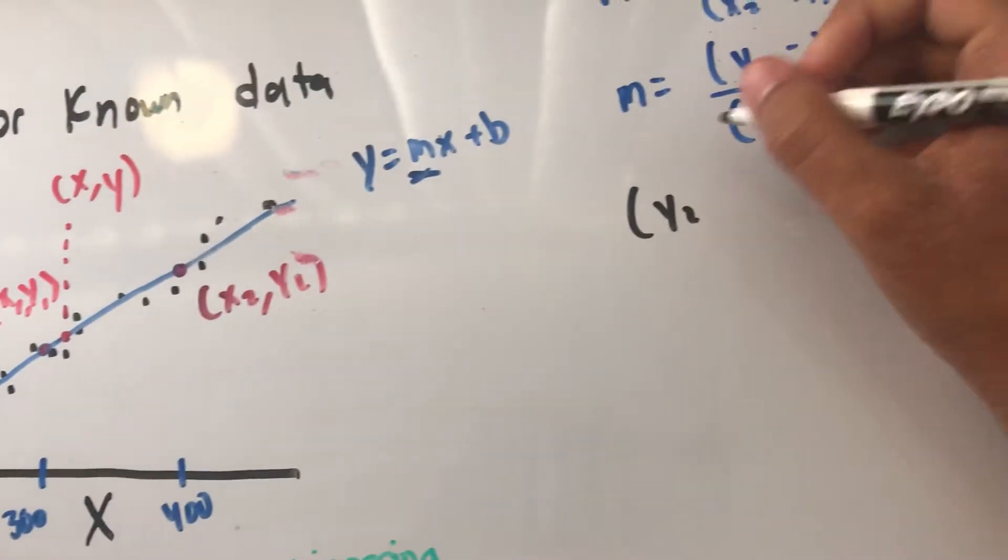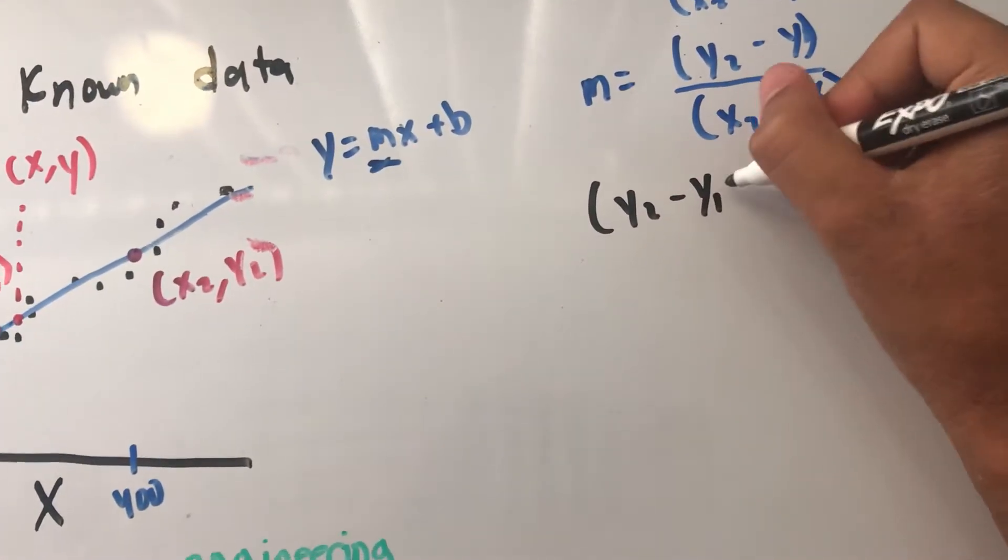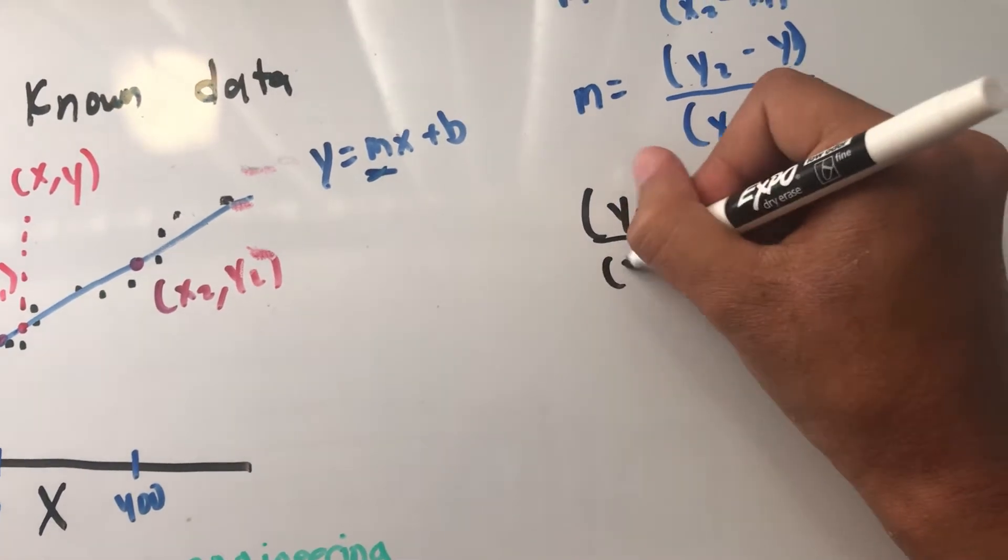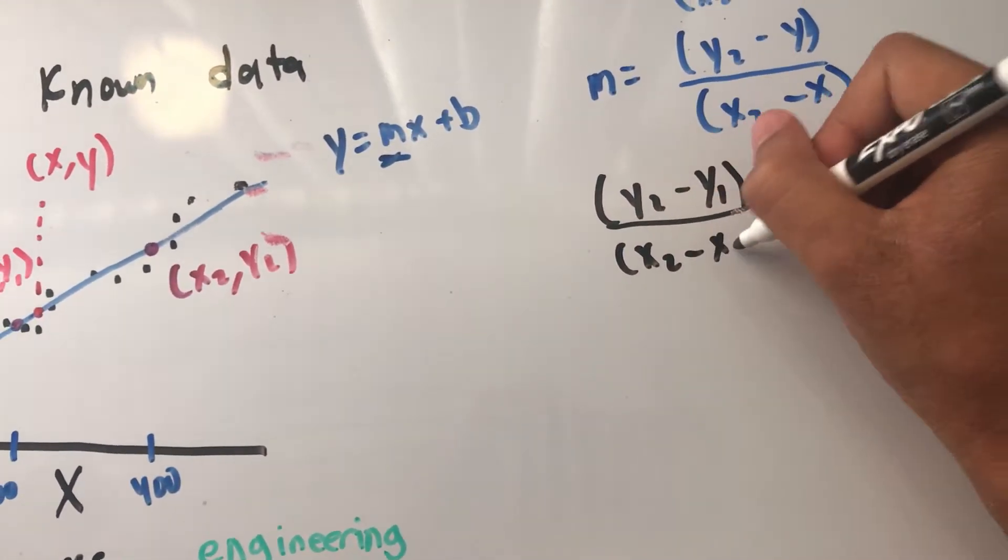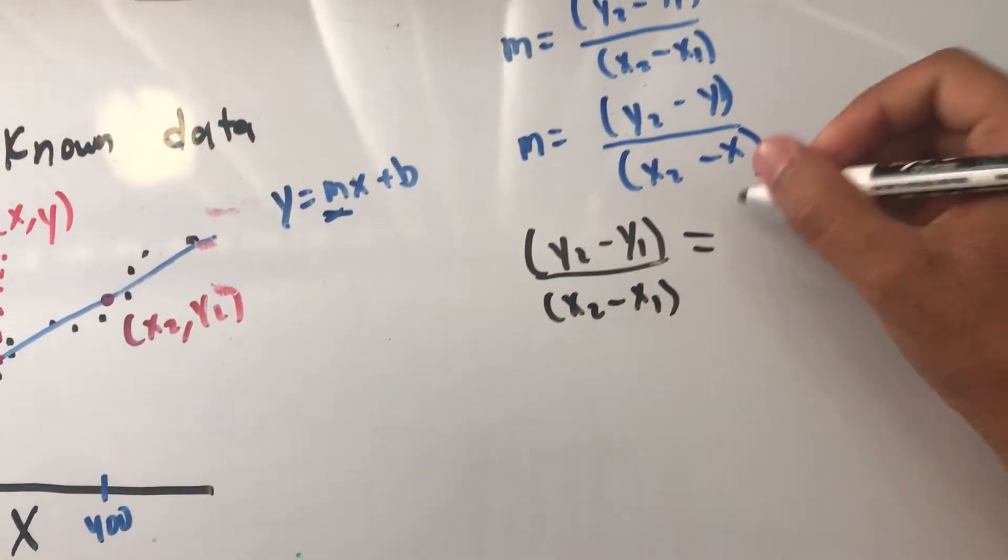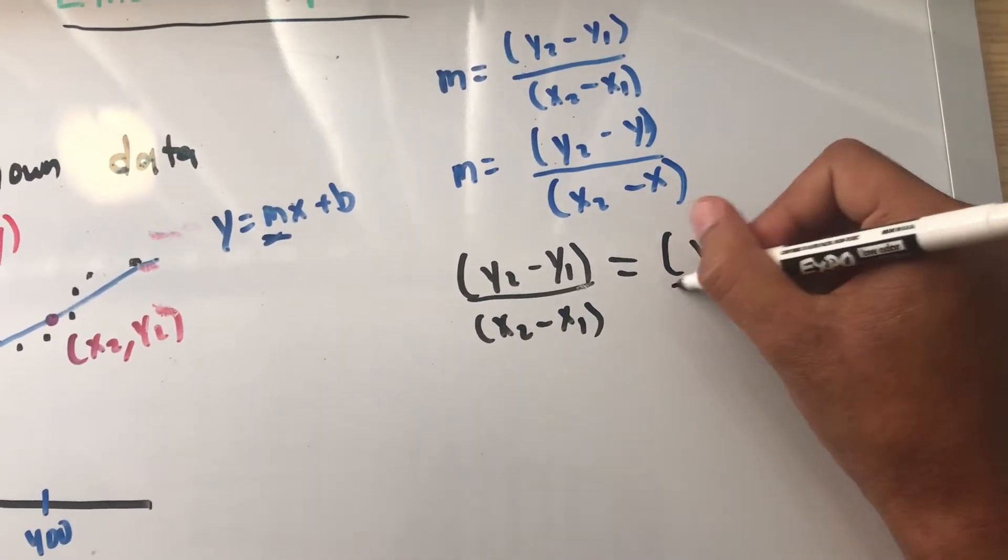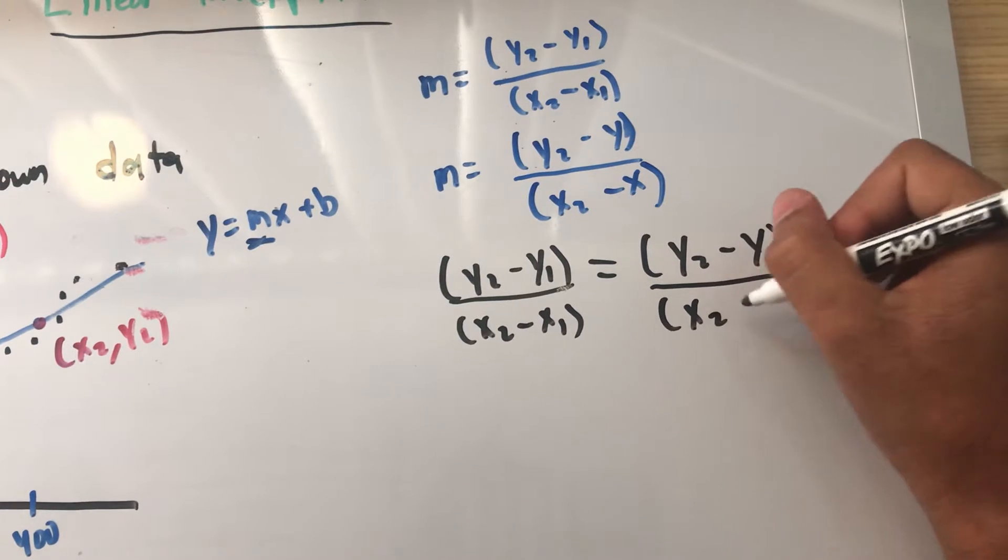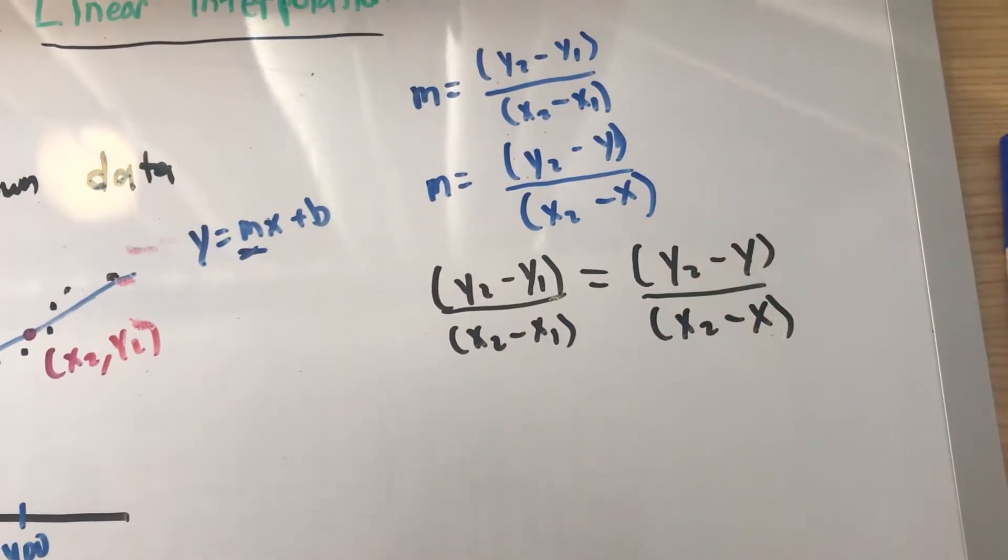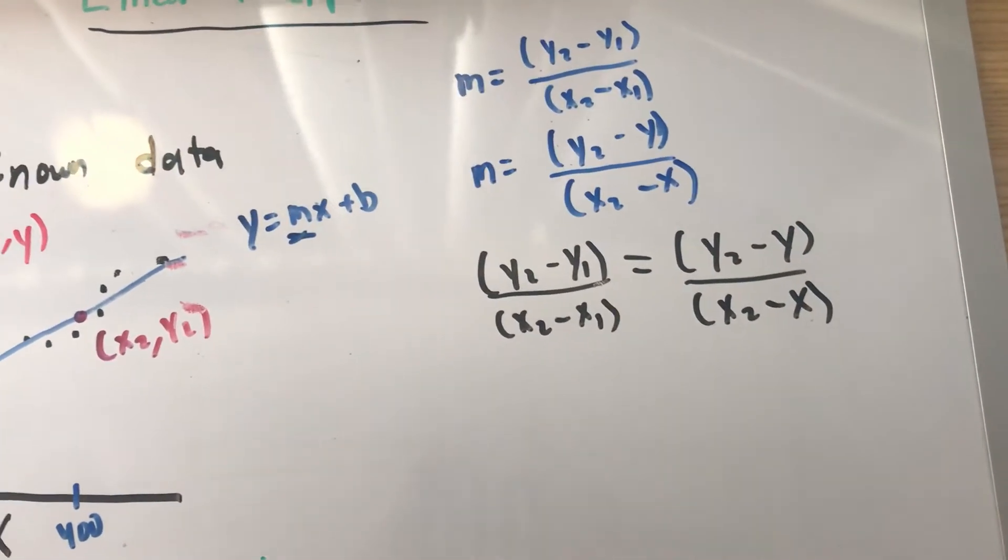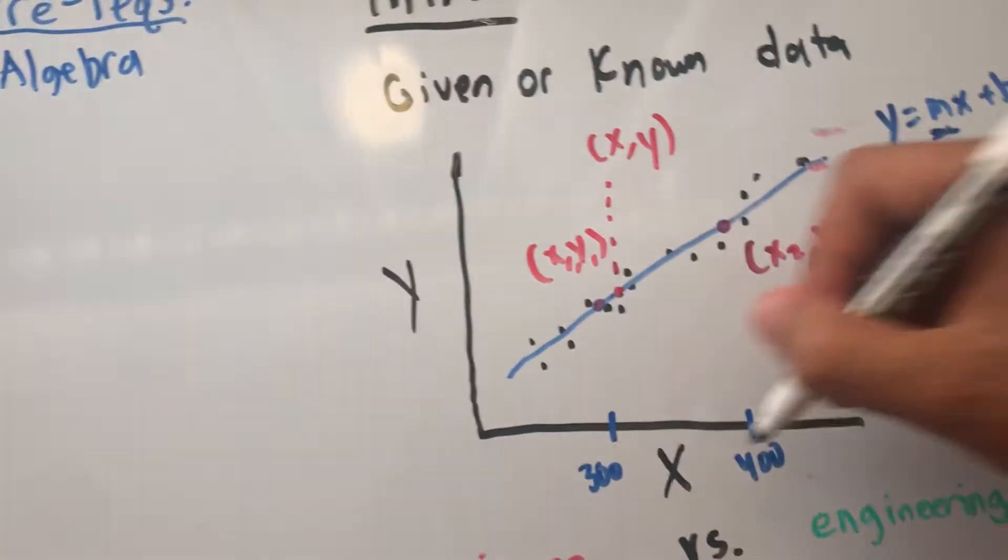So I'm going to say y2 minus y1 over x2 minus x1 equals y2 minus y over x2 minus x. What we got to do is solve for y as a function of x in order to interpolate the line in between.